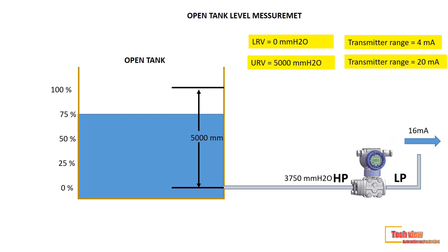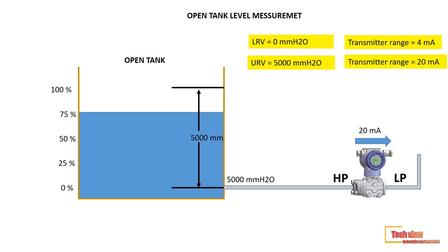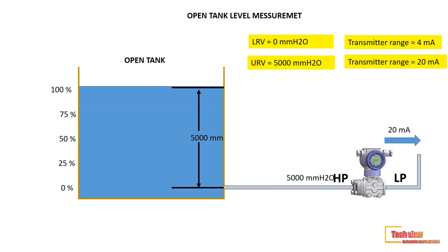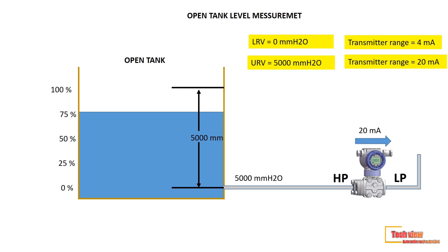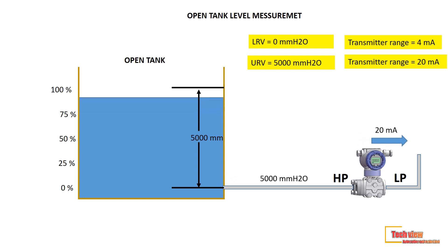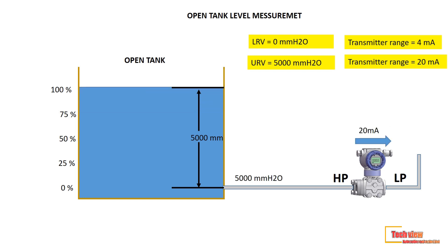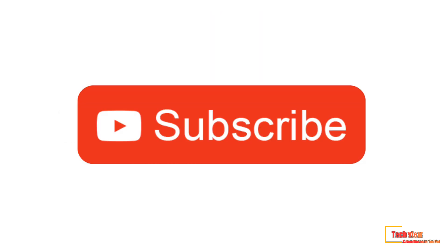When the level rises to 100% of the tank, pressure rises to 5000 mmH₂O, and the transmitter converts and sends 20 mA to the DCS. I hope you all understood open tank level measurement. How to measure a closed tank level will be explained in upcoming lessons — keep watching.